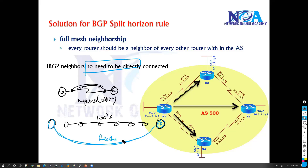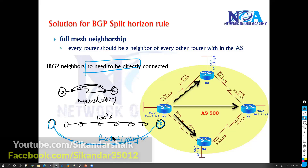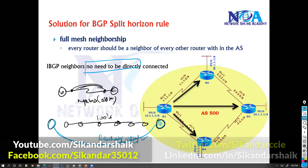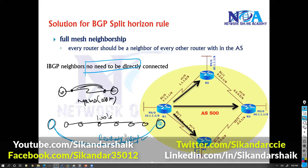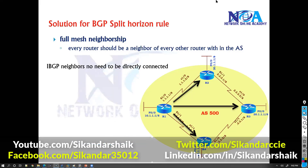But in BGP, you might be forming neighborship between two routers with hundreds of routers in between — these two routers can still form neighbors as long as they have reachability. That reachability is typically provided using OSPF or EIGRP, and we'll talk about this in the next topic. At this point you need to understand that BGP neighbors do not need to be directly connected, whether it is internal or external BGP.